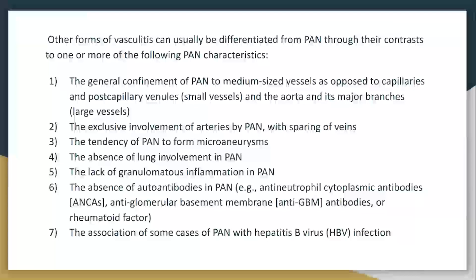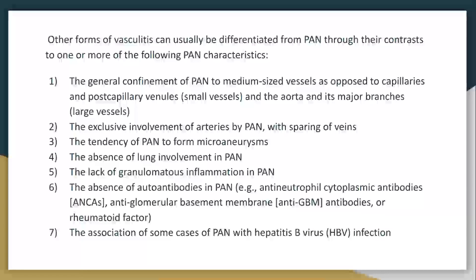Medium to large vessels — the aorta and its major branches. One of the major vasculitides that we see, especially with pulmonary and lung involvement, would be Wegener's granulomatosis, also known as GPA.